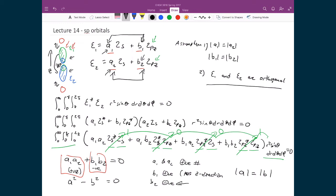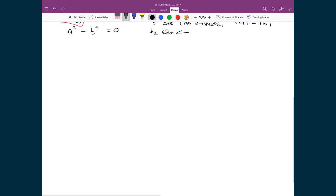So let's find out what they are, what A and B are through normalization. So, to normalize we'll say, here's our integral, 0 to infinity, 0 to pi, 0 to 2 pi,